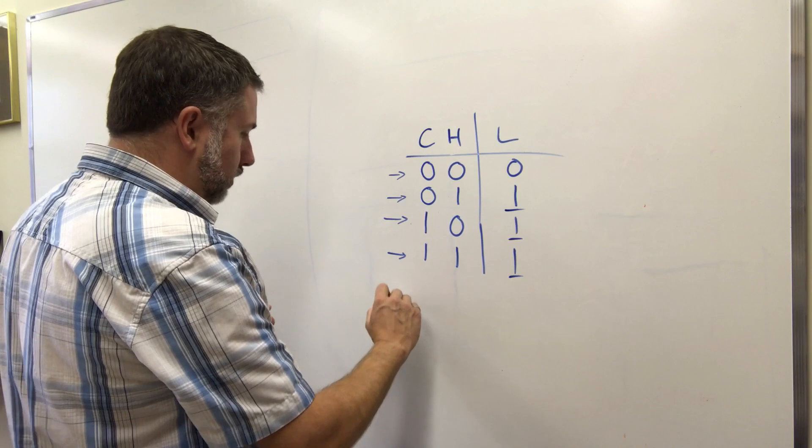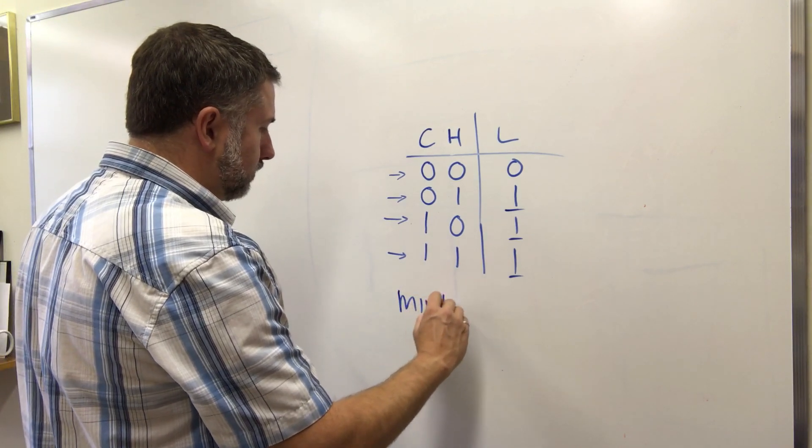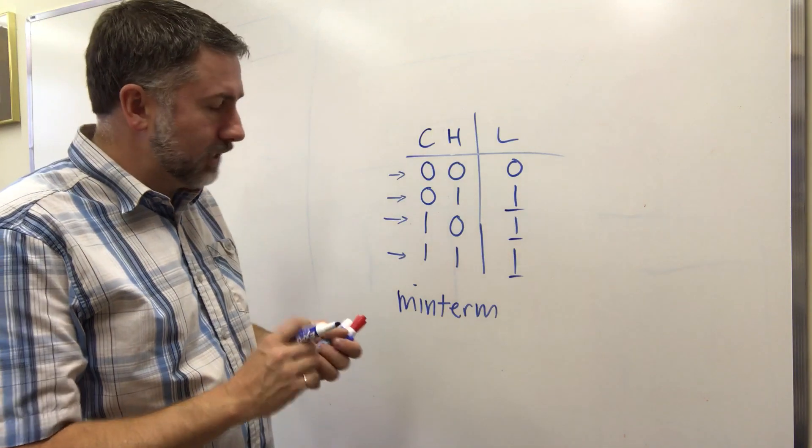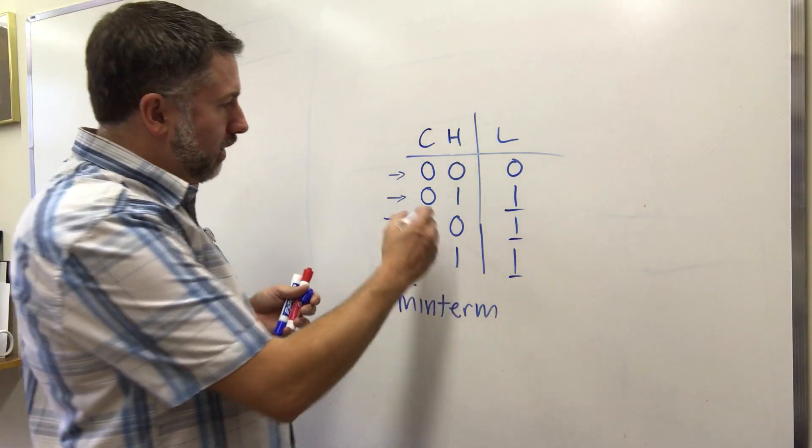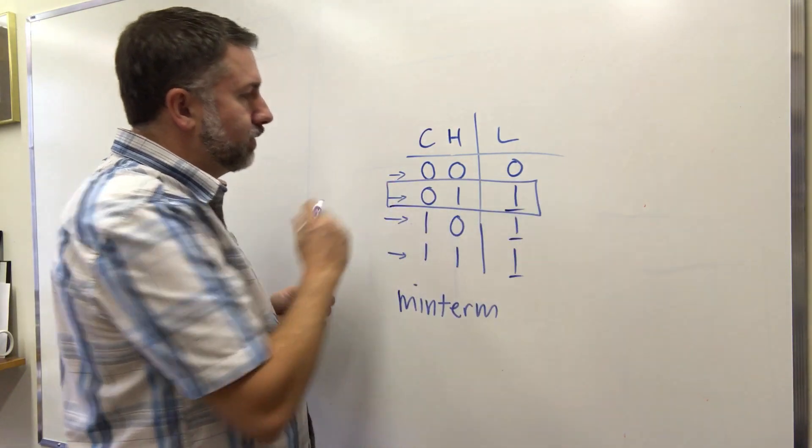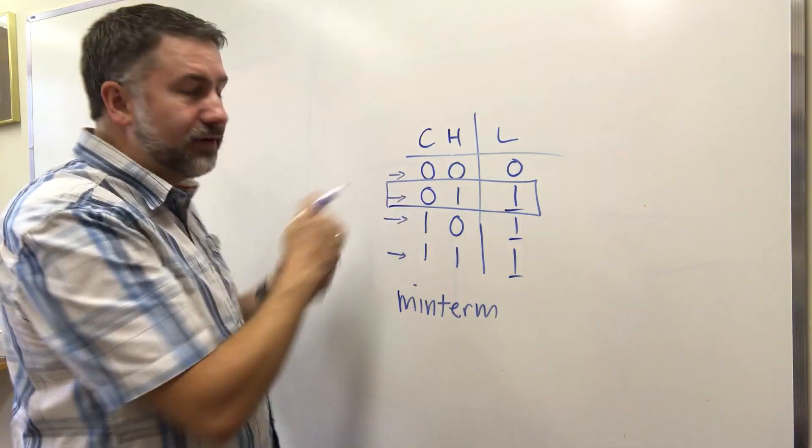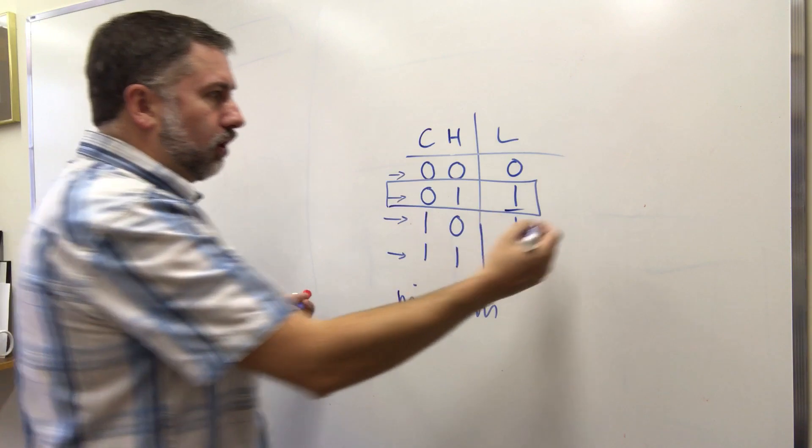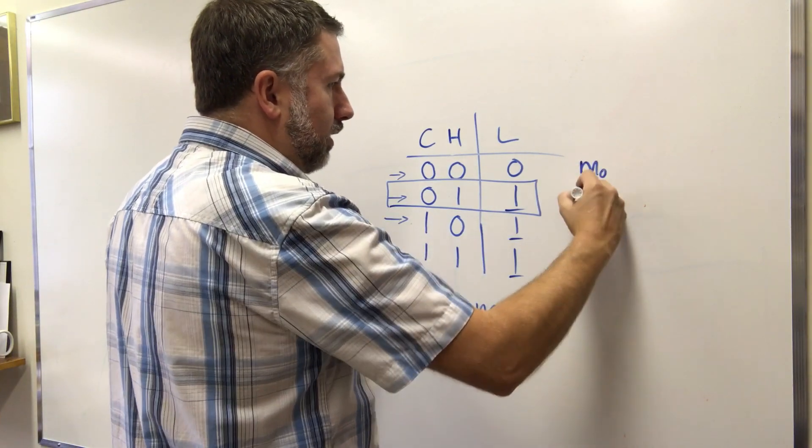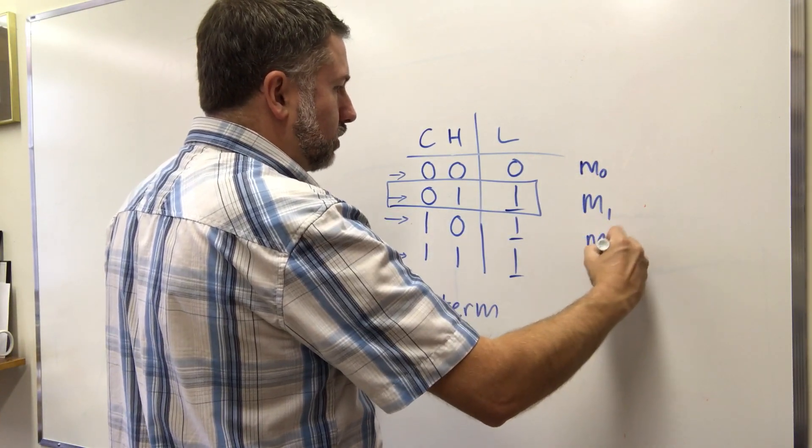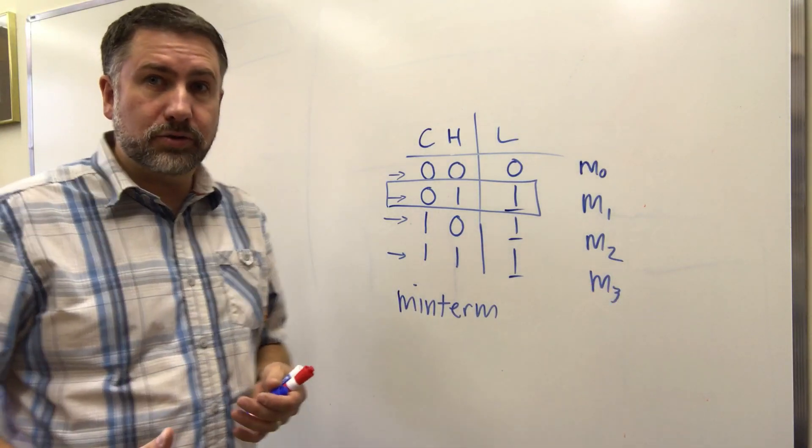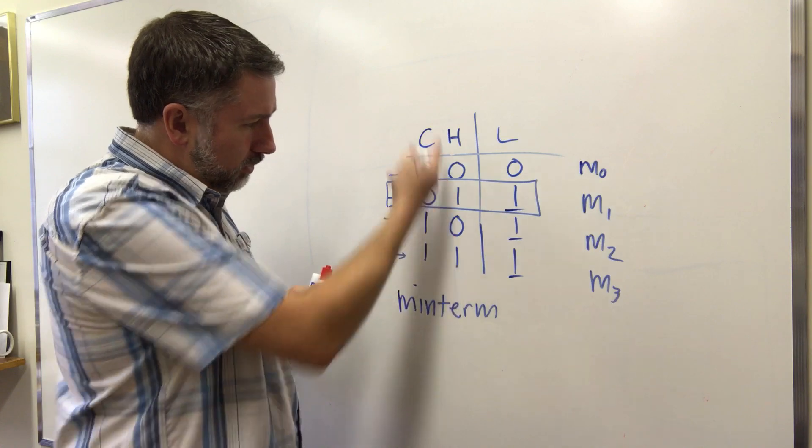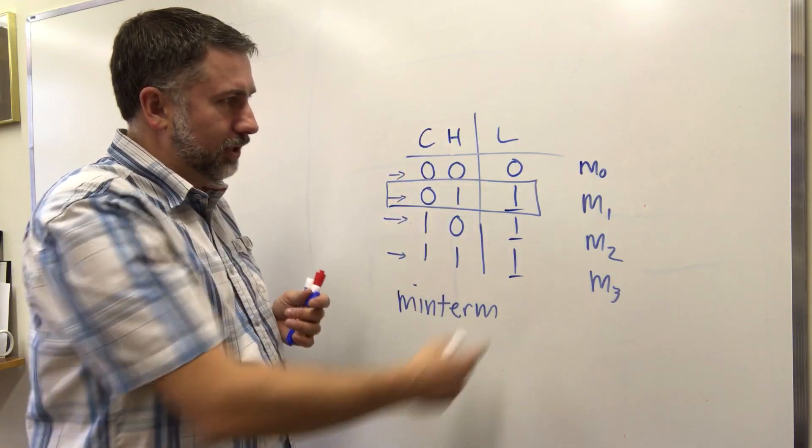These names are minterms. The word minterm corresponds to a term in an expression that relates to a complete set of input. So in this case, there are four minterms. We call this minterm 0, minterm 1, minterm 2, and minterm 3. And that just corresponds to the binary code that is the integer represented by that input combination.